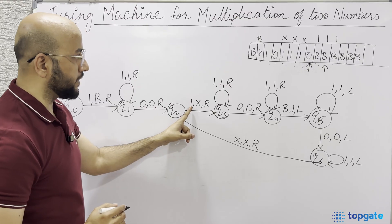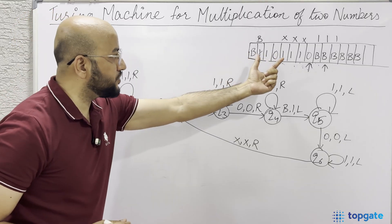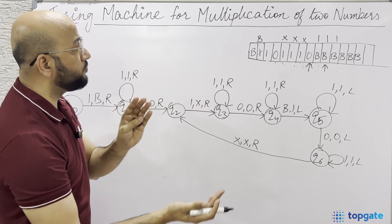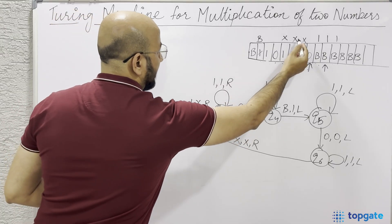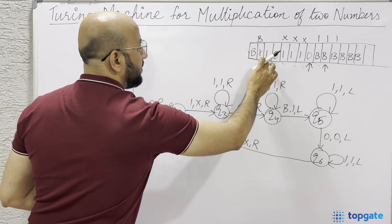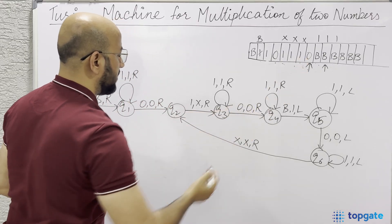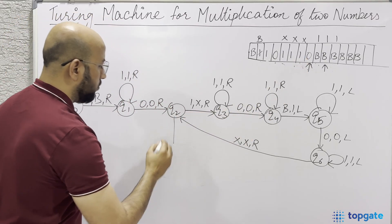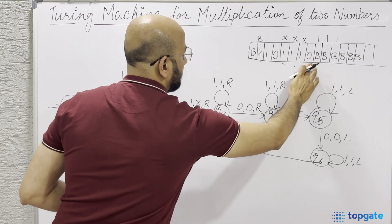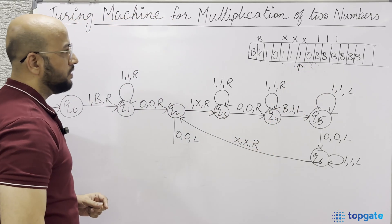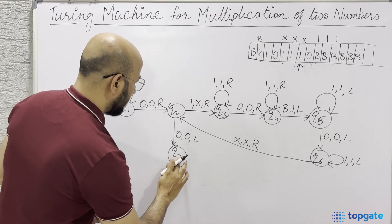Now at Q2, the pointer finds a 0 instead of a 1. Finding a 0 means the second string (second number) is complete. Therefore, I need to go back to the very first number. While going back, I will revert all the Xs back to 1 so they can be multiplied again with the second number. At Q2, if you find a 0, keep it as 0 and go left, reaching state Q7.